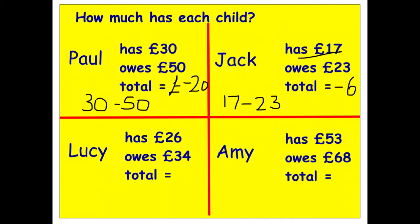Lucy has twenty-six pounds but she owes thirty-four, so the sum is twenty-six minus thirty-four. Taking away twenty-six puts us on zero, but we still need to take away a further eight because twenty-six plus eight equals thirty-four, so counting back eight from zero brings us down to minus eight, or negative eight.